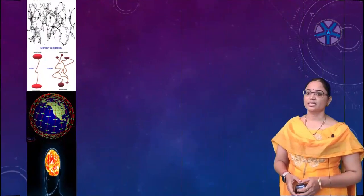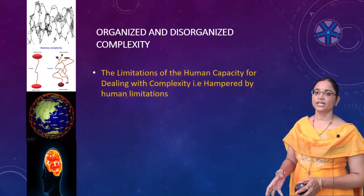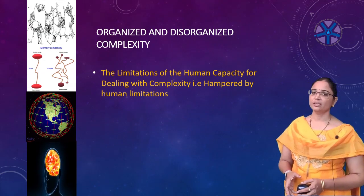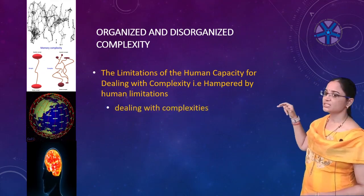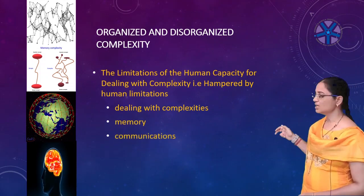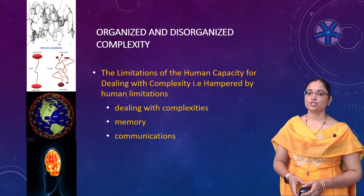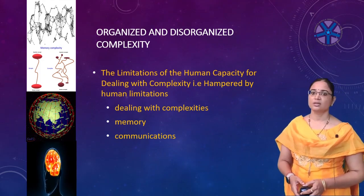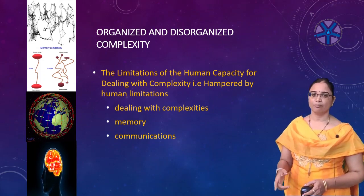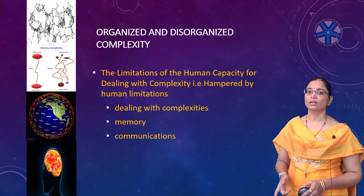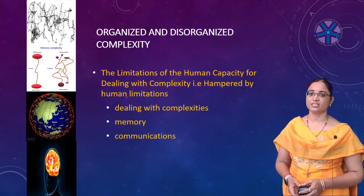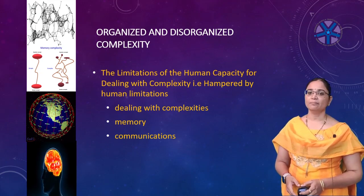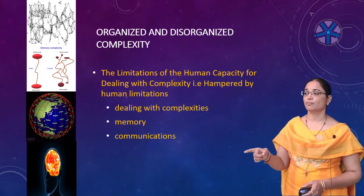Coming to the limitations of the human capacities for dealing with complexity — hampered by human limitations. There are three types: dealing with complexities, memory, and communication. When we devise a methodology for the analysis and design of complex systems, we need to bear in mind the limitations of human beings who will be the main acting agents, especially during early phases. Unlike computers, human beings are rather limited in dealing with complex problems, and any method needs to bear that in mind and give as much support as possible.